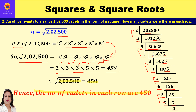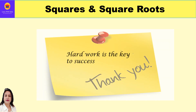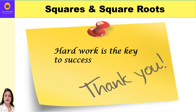So the number of cadets in each row is 450. If the question asks for the number of rows, the answer is the same, because we multiply A × A where A is both the number of rows and the number of cadets in each row. So the answer is 450 either way. Hope you understood both questions — please like and subscribe. Thank you everyone, have a good day ahead.